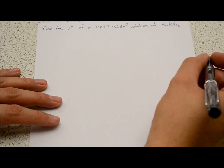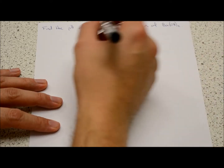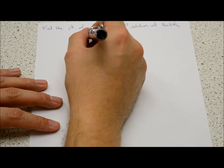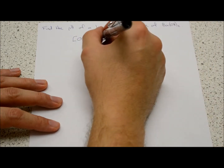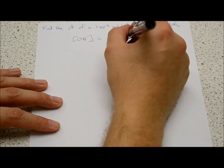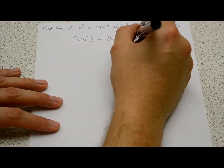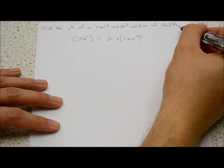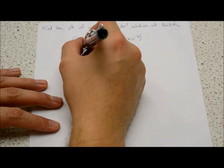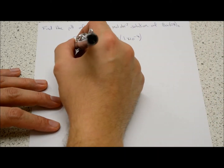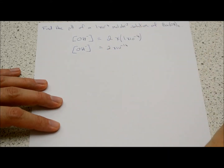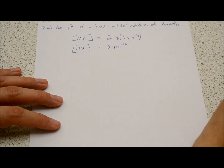We start by finding the concentration of hydroxide ions. The concentration of OH⁻ is 2 × 1×10⁻⁴, because there are two hydroxide ions per formula unit, so [OH⁻] = 2×10⁻⁴ mol/dm³.